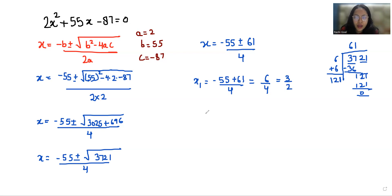Now x2 is negative 55 negative 61 by 4, that is negative 116 by 4, which equals negative 29.